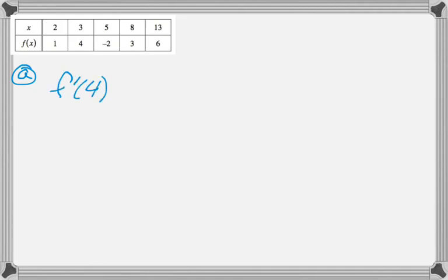We're given a table of values, we're told that the function is twice differentiable, and the first thing we have to find is f' of 4. So 4 is between 3 and 5, so we're going to use the slope of the secant line through those two points to approximate this.